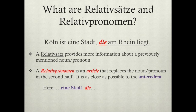What are Relativsätze and Relativpronomen? From what we've learned: 'Köln ist eine Stadt, die am Rhein liegt.' The Relativsatz is the underlined element — it simply provides more information about the first part, specifically about the antecedent 'eine Stadt'. In the second half we're simply adding on to that element, and we do so by using a Relativpronomen, which looks pretty much like a definite article.